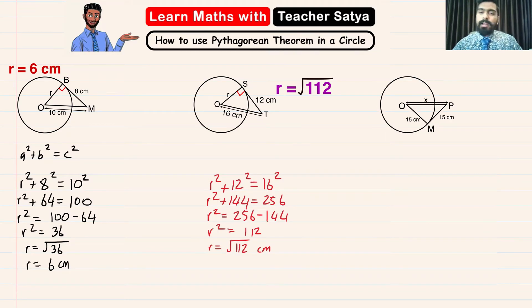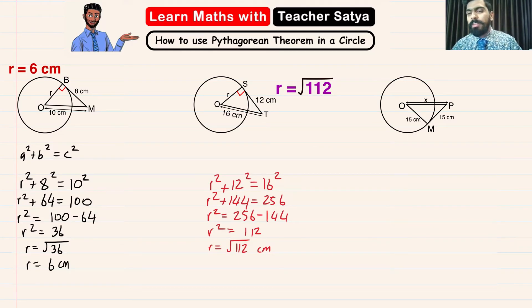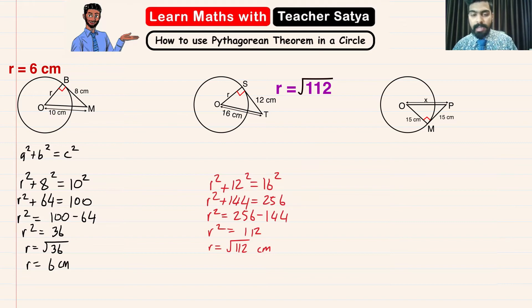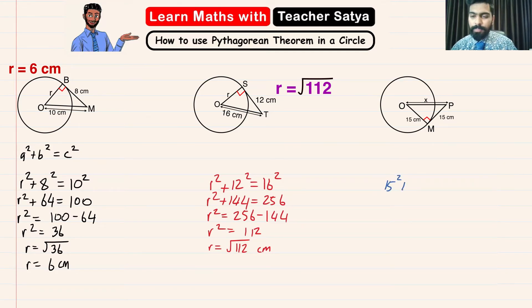For the final question, we again find the right angle first to identify the hypotenuse. MP is the tangent and MO is the radius, so this angle right here will be our right angle. Therefore the side opposite to the right angle will be our hypotenuse, which is x.